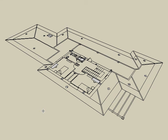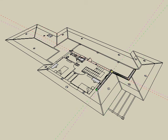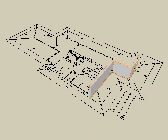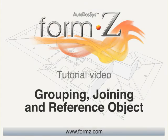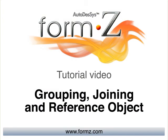For example, I can bring it in and it's treated as one object, and I can use the vector line tool and still snap to the different elements embedded inside of that reference object. And this concludes the grouping, joining, and reference object tutorial.